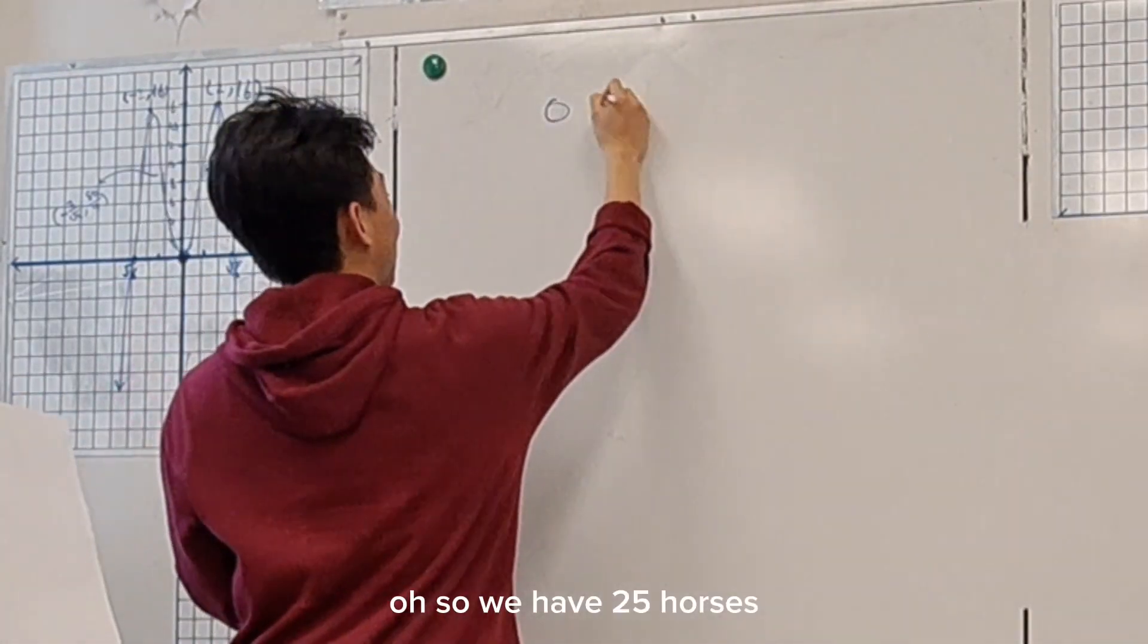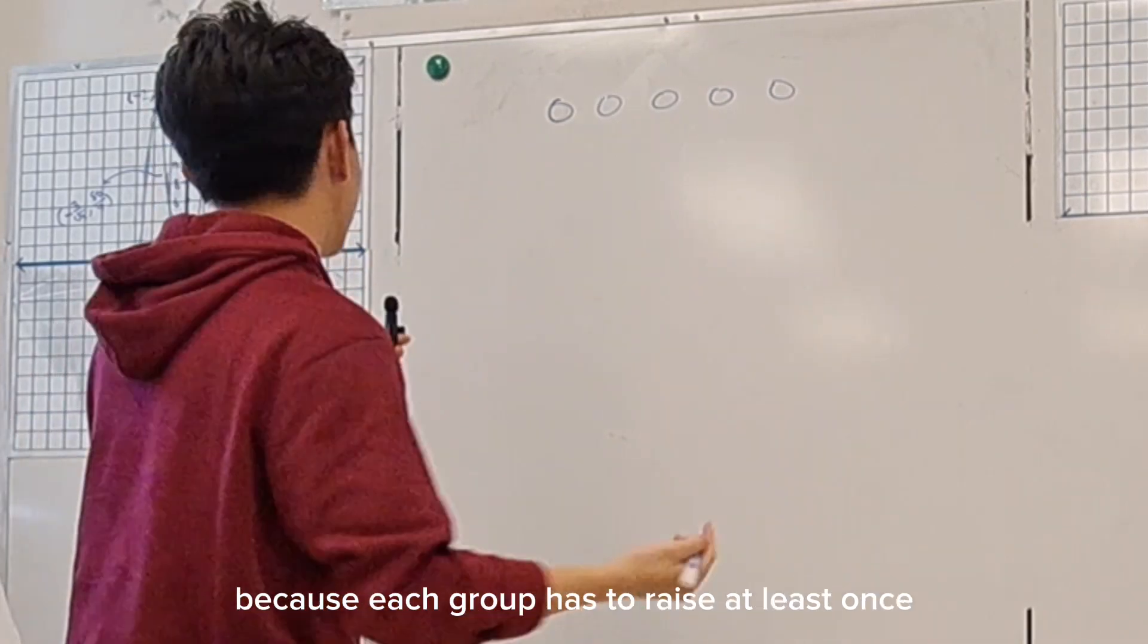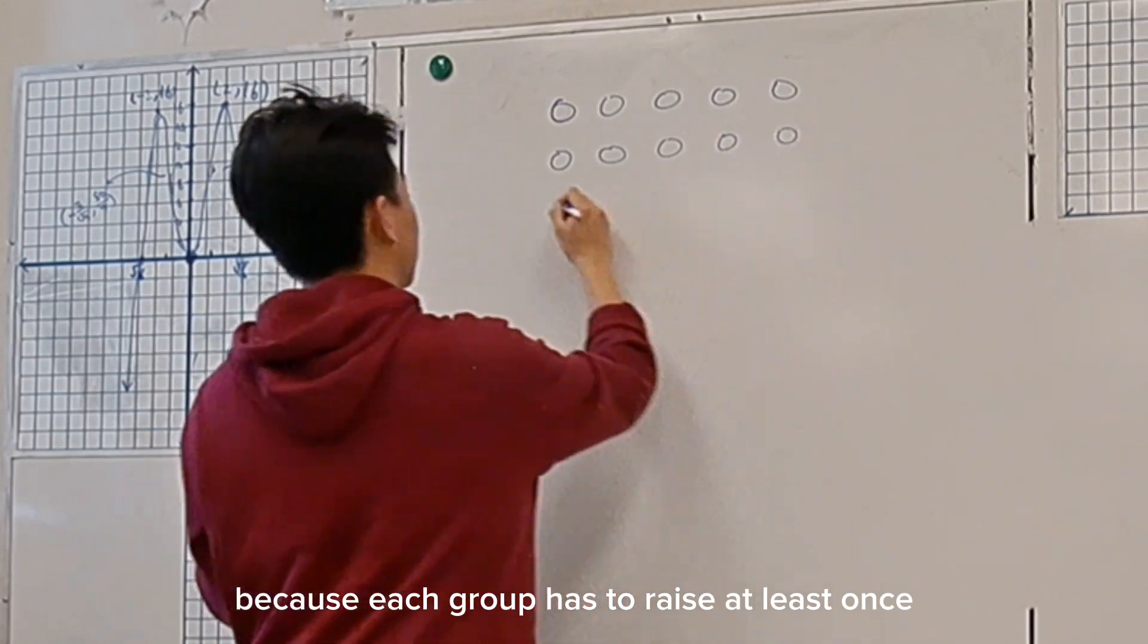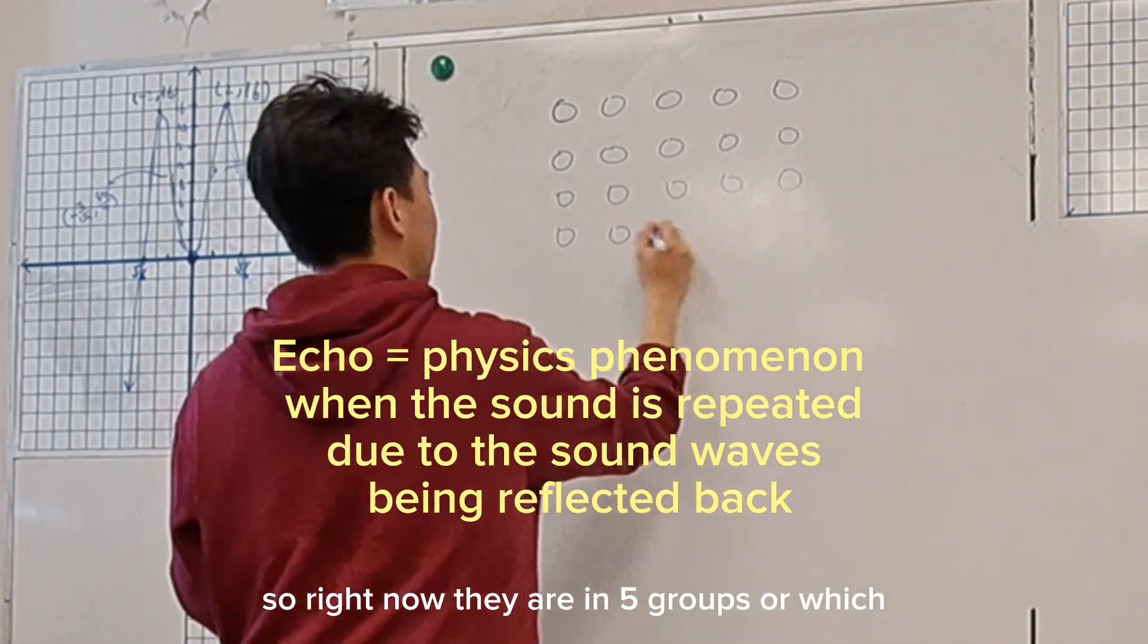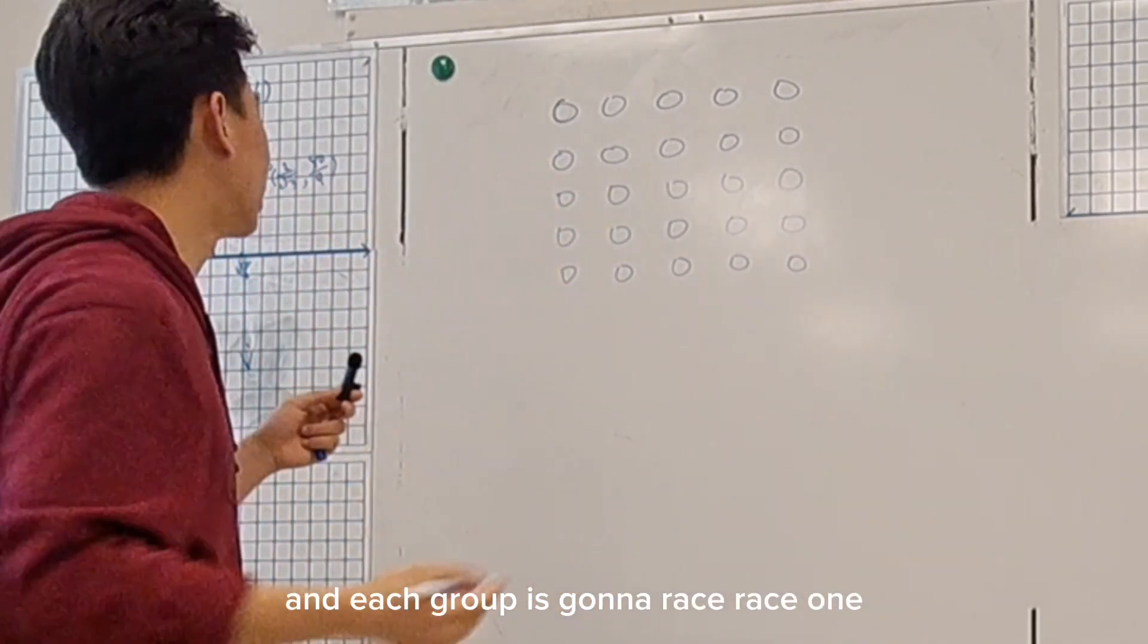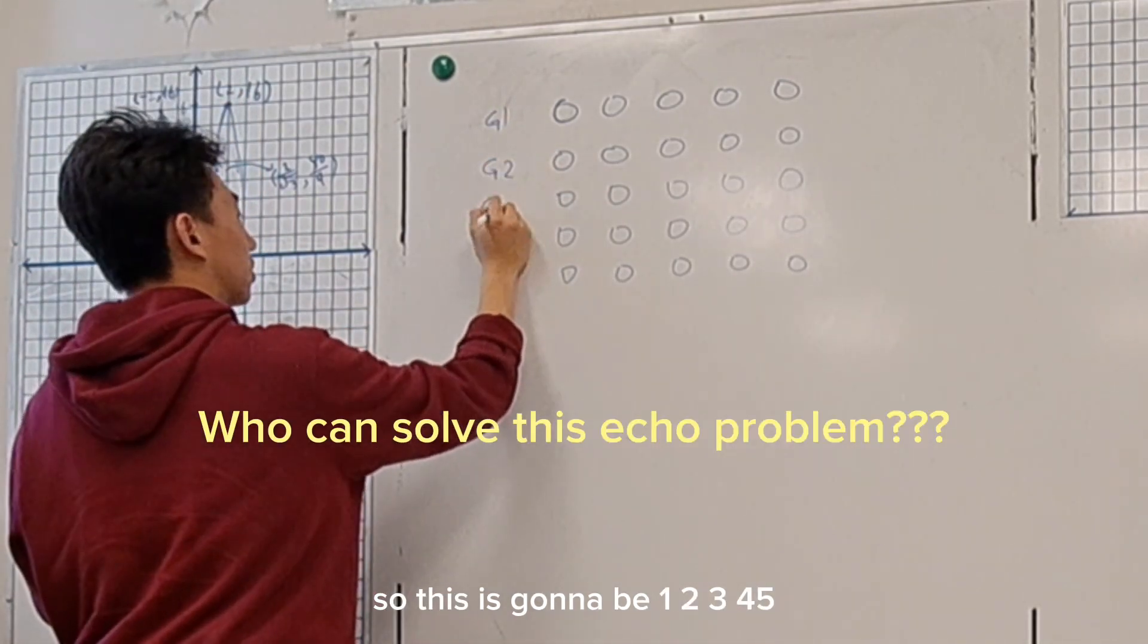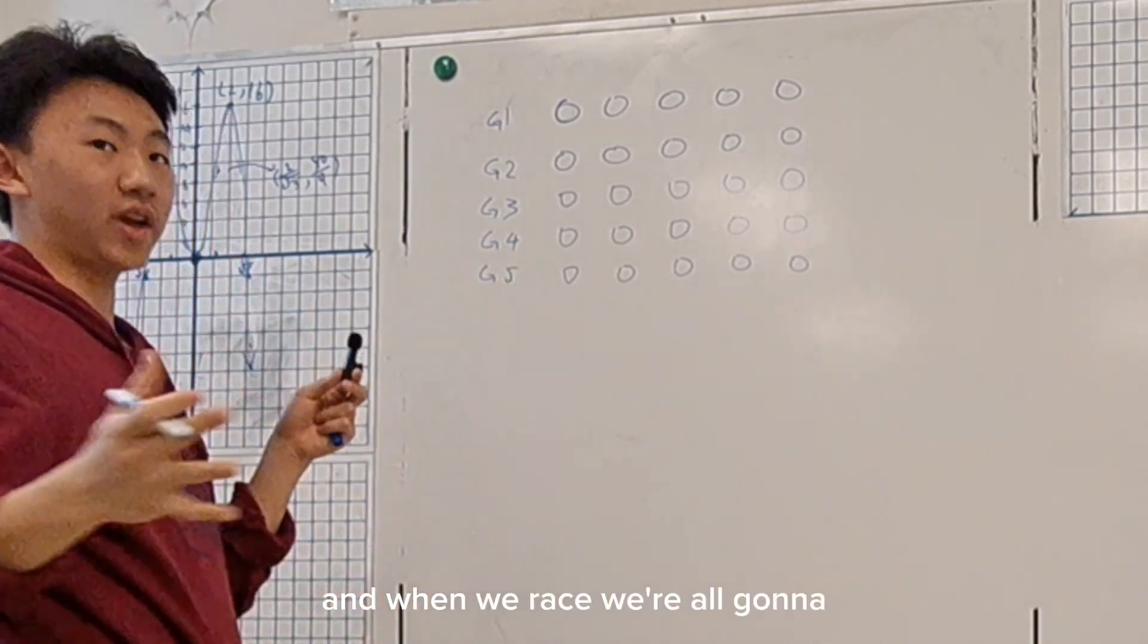Oh, there we go. So we have 25 horses, and I'm going to place them into five groups because each group has to race at least once. So right now they are in five groups, which I'm going to put them in rows. And each group is going to race once. So this is going to be group one, two, three, four, five.